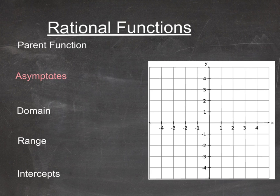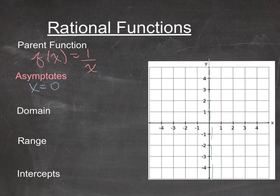The first parent function to look at is f(x) = 1/x. Before graphing, we want to figure out the asymptotes. The asymptotes come from those non-permissible values. Since we can never divide by zero, when x equals 0 we have a problem, so x = 0 is a vertical asymptote — that's the y-axis. Also, f(x) can never equal 0 because the numerator is the constant 1, so we also have a horizontal asymptote at y = 0, along the x-axis.